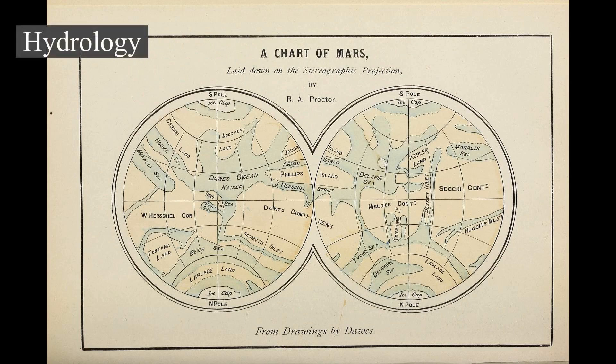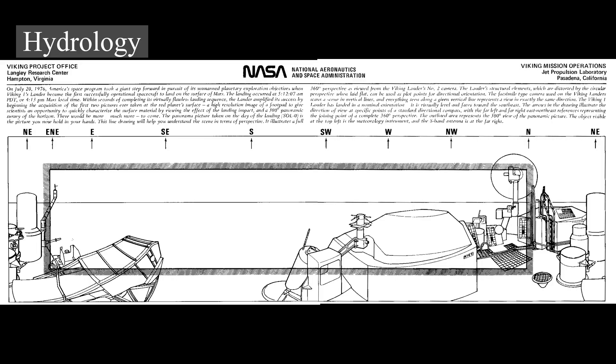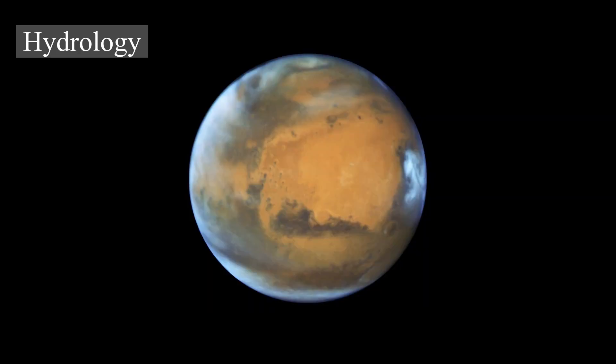Water in its liquid form cannot exist on the surface of Mars due to low atmospheric pressure, except at the lowest elevations for short periods. The two polar ice caps appear to be made largely of water. The volume of water ice in the south polar ice cap, if melted, would cover the entire surface of the planet to a depth of 11 meters. Large quantities of ice are thought to be trapped within the thick cryosphere of Mars. Radar data from Mars Express and the Mars Reconnaissance Orbiter show large quantities of ice at both poles and at middle latitudes. The Phoenix lander directly sampled water ice in shallow Martian soil on 31 July 2008.